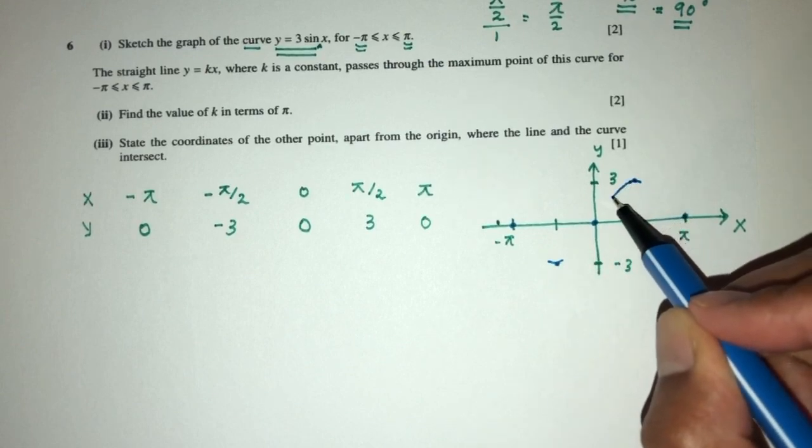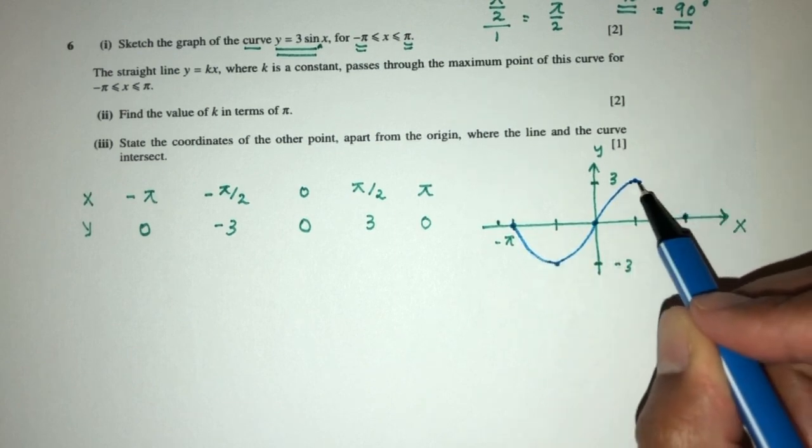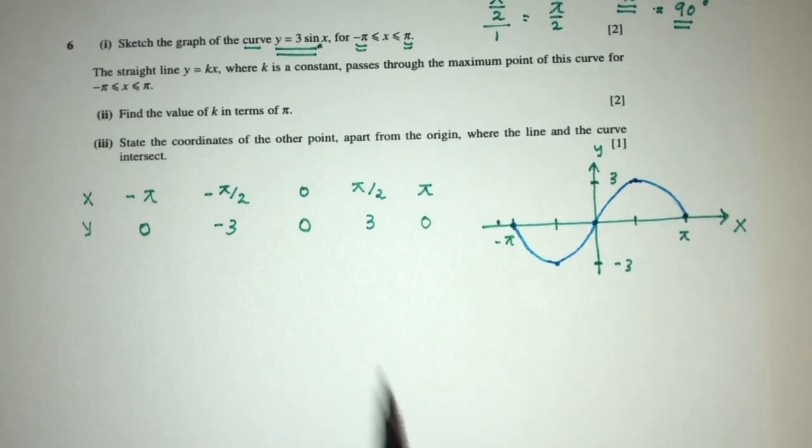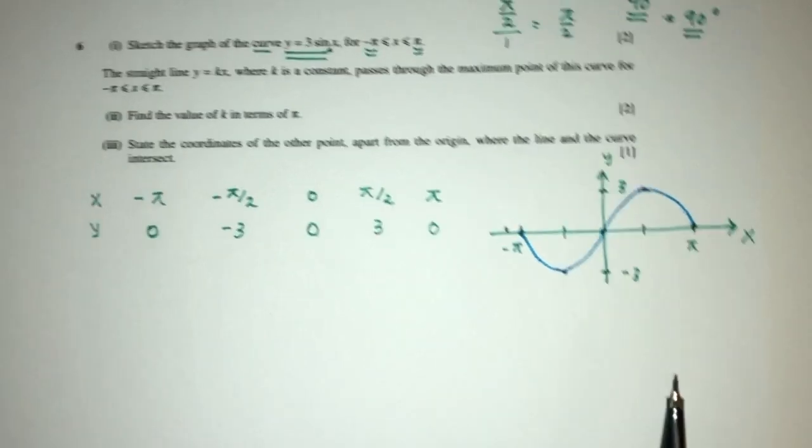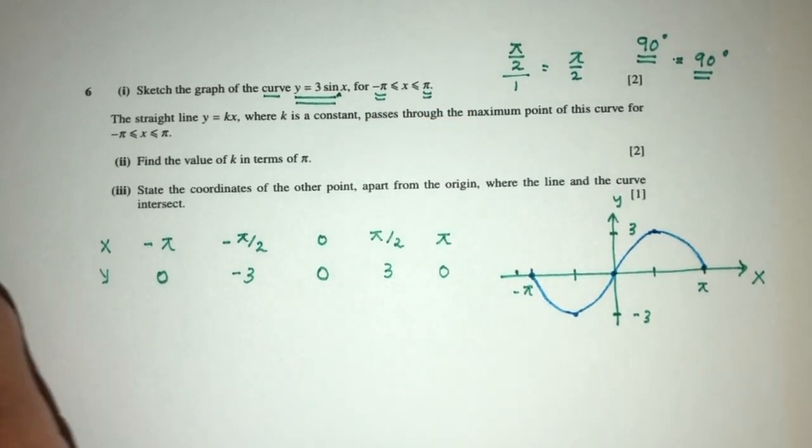That will be this. So connecting this, and this, and this. As you can see, this is a sketch for your graph of y equal to 3 sine x between the domain of minus pi to pi. Okay, that is part 1 of the question.